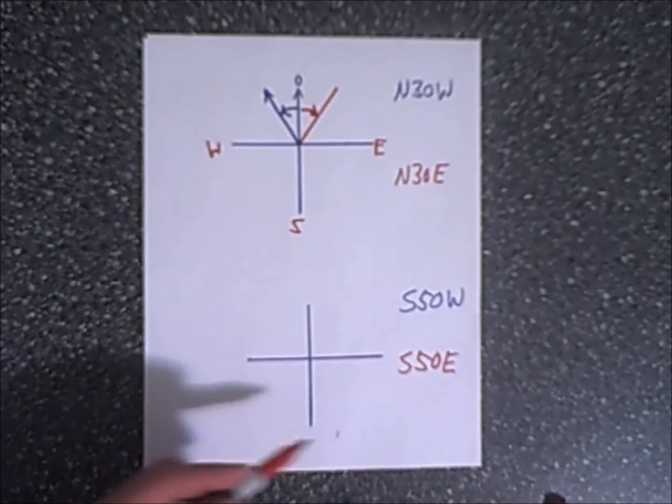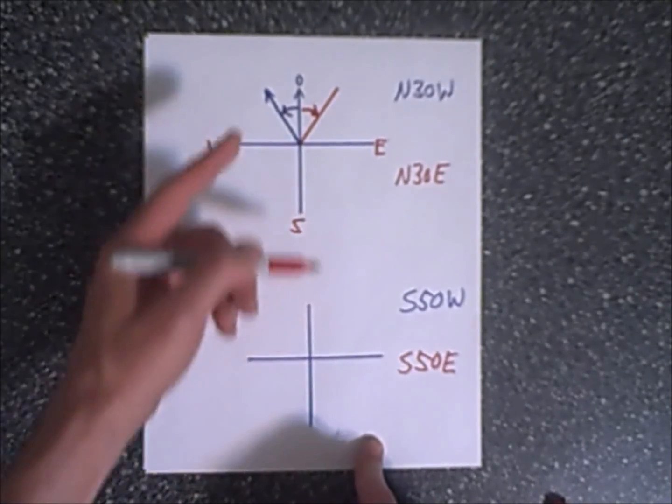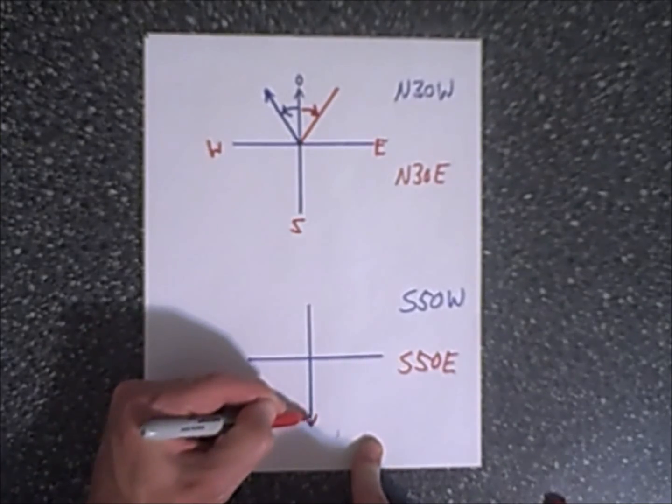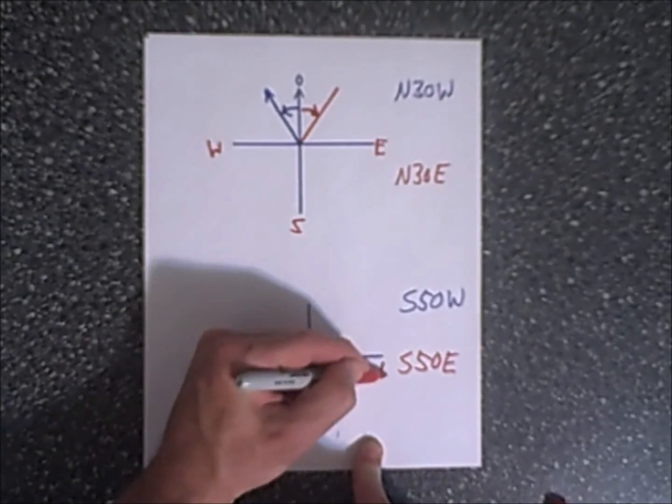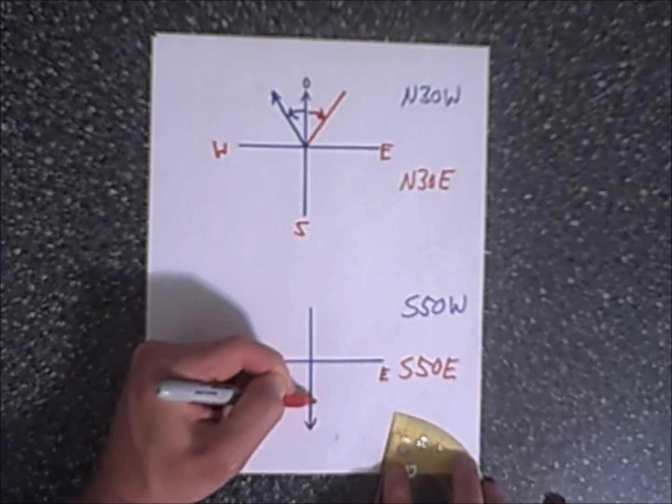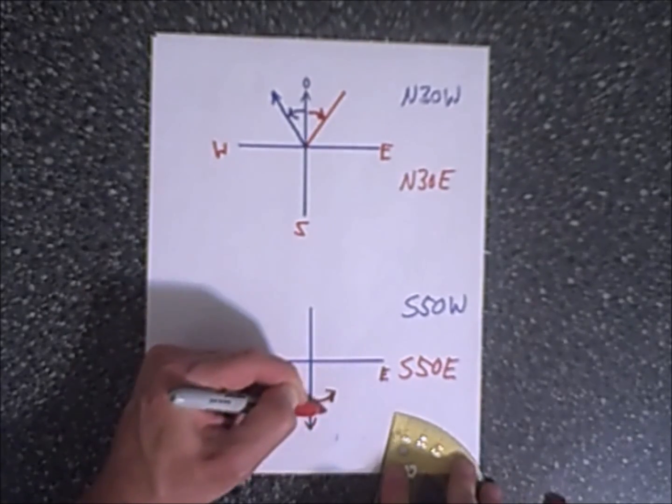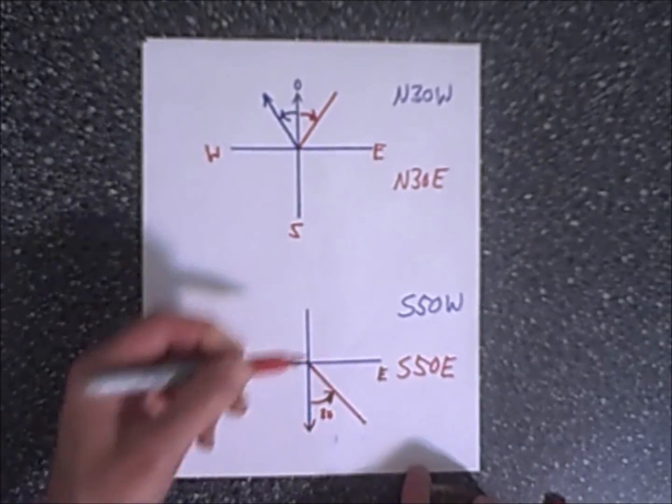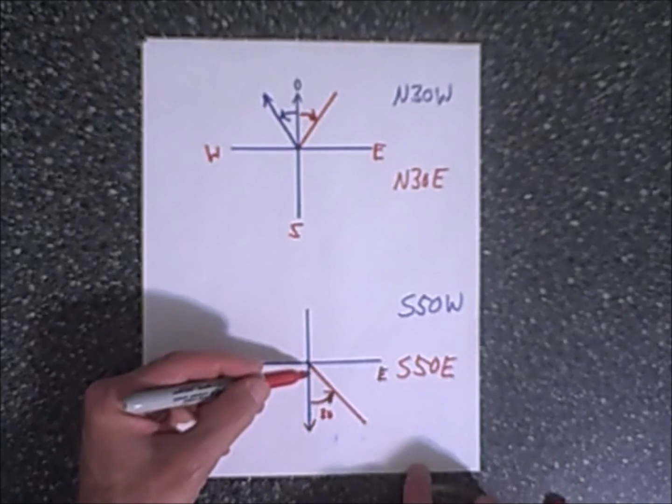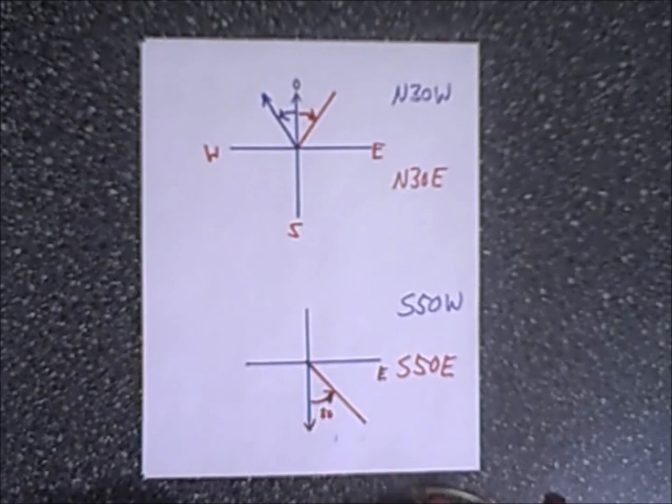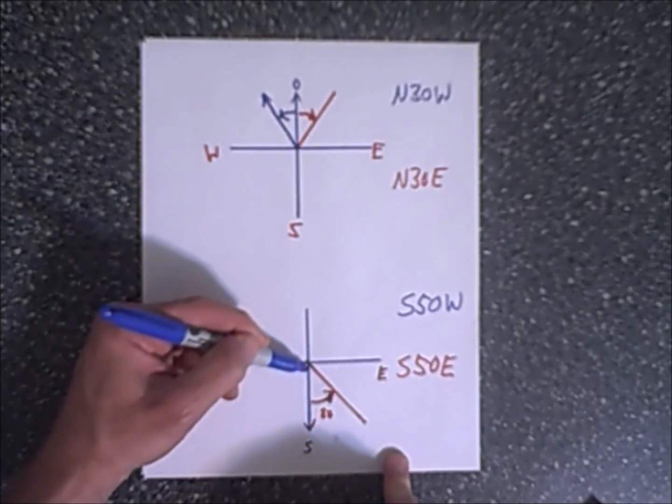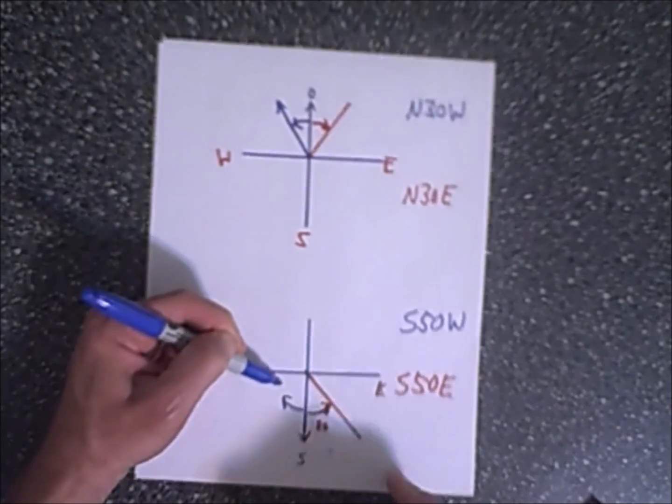Knowing that, we can look at the examples at the bottom. We want to move south 50 east, so again in this case instead of starting north on this axis, we're going to start at south, and we're going to move 50 degrees to the east, so we move 50 degrees this way and we have an angle of 50 degrees, and actually it's a direction in this manner.